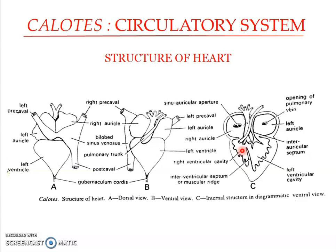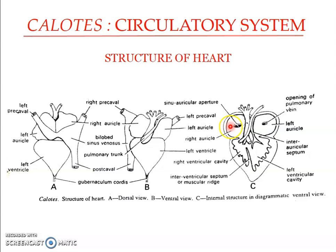From the ventricle arise three blood vessels or arches: the right systemic, the left systemic, and the pulmonary. The pulmonary artery or pulmonary trunk carries blood to the lungs for oxygenation, while the right and left systemic arches carry blood to various parts of the body. The openings of these arches are guarded by semilunar valves to prevent backflow of blood.